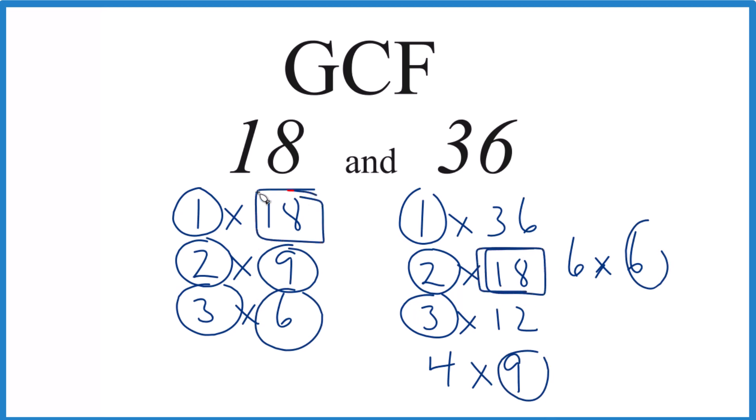So 18, that's going to be the greatest common factor. It goes into 18 and 36 evenly. So that's how you do it.